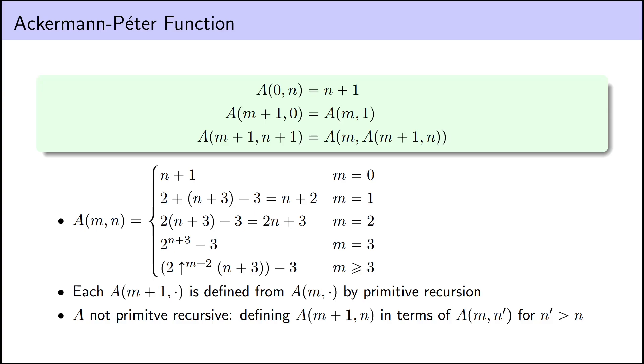Looking back at our equations, there's a bit of a problem here. The third equation defines A of M plus 1 N in terms of A of M N prime for a potentially much larger N prime. If this were a primitive recursive definition, we would have to define A of M plus 1 N in terms of A of M N. And similarly, even though any specific hyperoperation is primitive recursive, we can't take M as an input and calculate the M of Barrows operation.